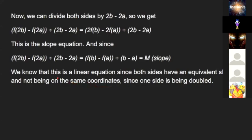And since (f(2b) - f(2a))/(2b - 2a) = (f(b) - f(a))/(b - a), we know that this is a linear equation since both sides have an equivalent slope, and not being on the same coordinates, since one side is being multiplied by 2.